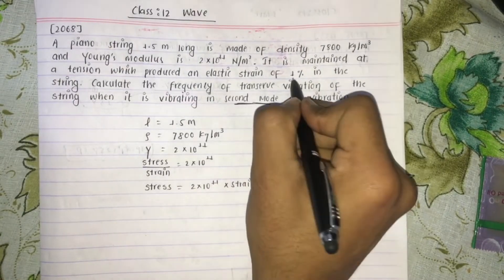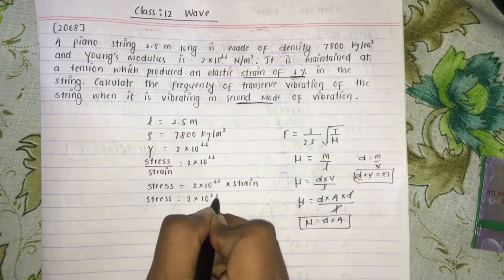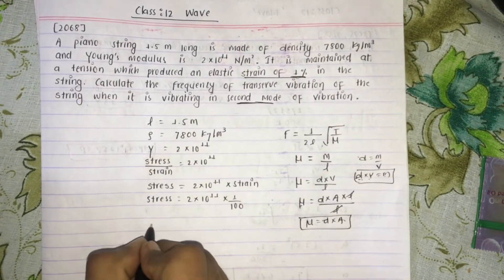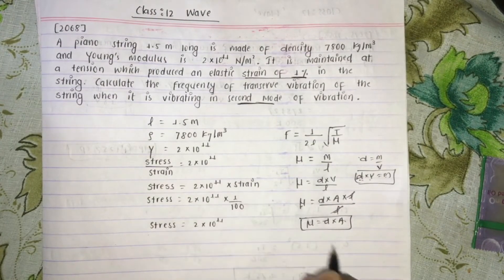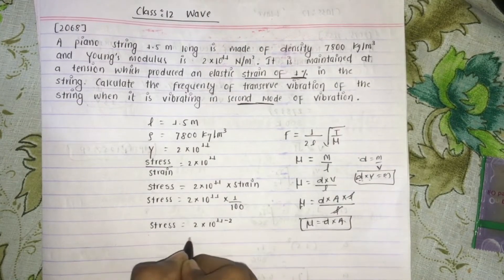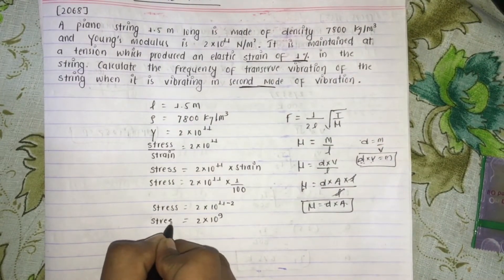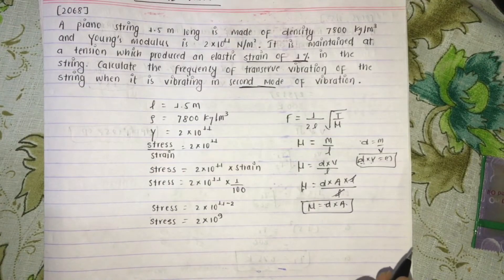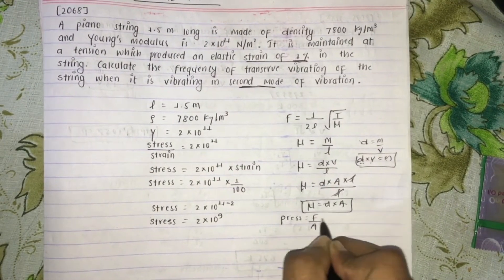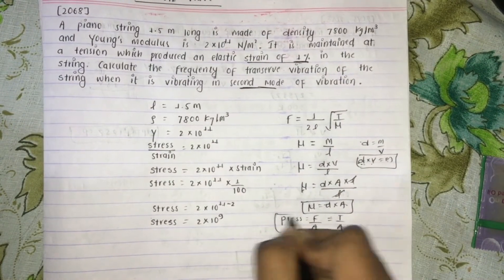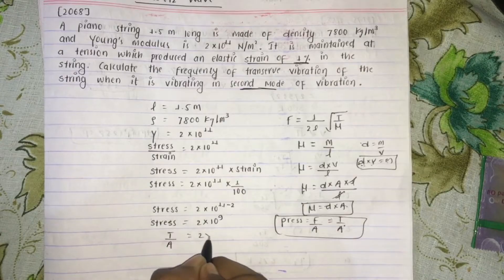With a strain of 1%, that is one by hundred, stress equals Young's modulus times strain. So stress equals 2 times 10 to the power 11 multiplied by 1 by 100, giving stress equals 2 times 10 to the power 9.